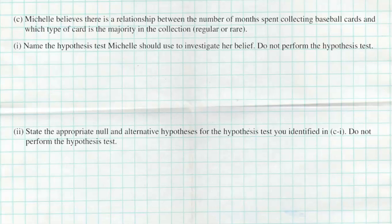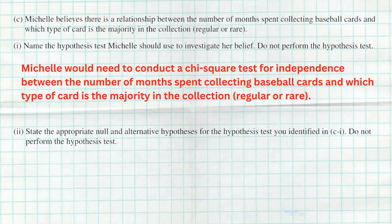Is it an independence test, a homogeneity test, or a goodness-of-fit test? Goodness-of-fit is for only one variable — we have two. Homogeneity is when we have multiple samples and we're testing if the distribution is the same across them. But Michelle only had one sample of 500 people, and she asked them two separate questions: how long have you been collecting, and do you have regular or rare cards as the majority? So this is going to be a chi-squared test for independence between the number of months spent collecting baseball cards and which type of baseball cards is the majority in the collection, regular or rare.